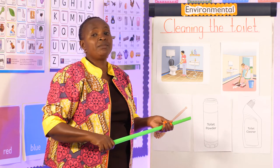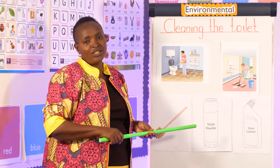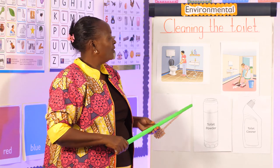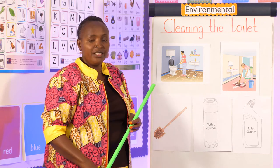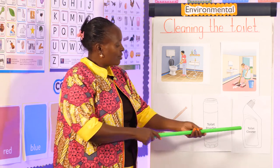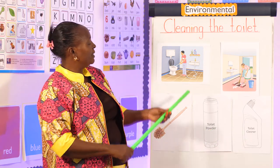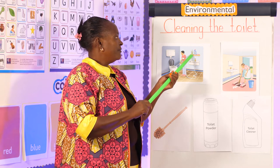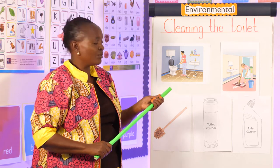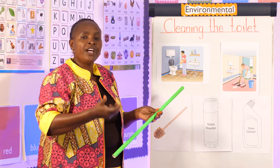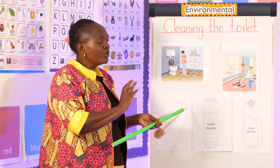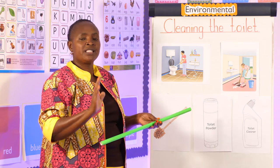When the toilet is kept clean, we will always want to go to the toilet. So our toilet should be clean. We should use the toilet brush, toilet powder, and toilet cleaner — which can be Harpik, or powder like Vim — to kill germs in the toilet and have that fresh smell.